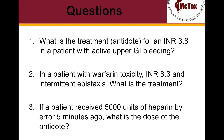Finally, our take-home questions are as follows. Question 1: What is the treatment for an INR of 3.8 in a patient with active upper GI bleeding? Question 2: In a patient with warfarin toxicity, an INR of 8.3 and intermittent epistaxis, what is the appropriate treatment? Question 3: If a patient received 5,000 units of heparin by IV 5 minutes ago, what is the dose of the antidote?